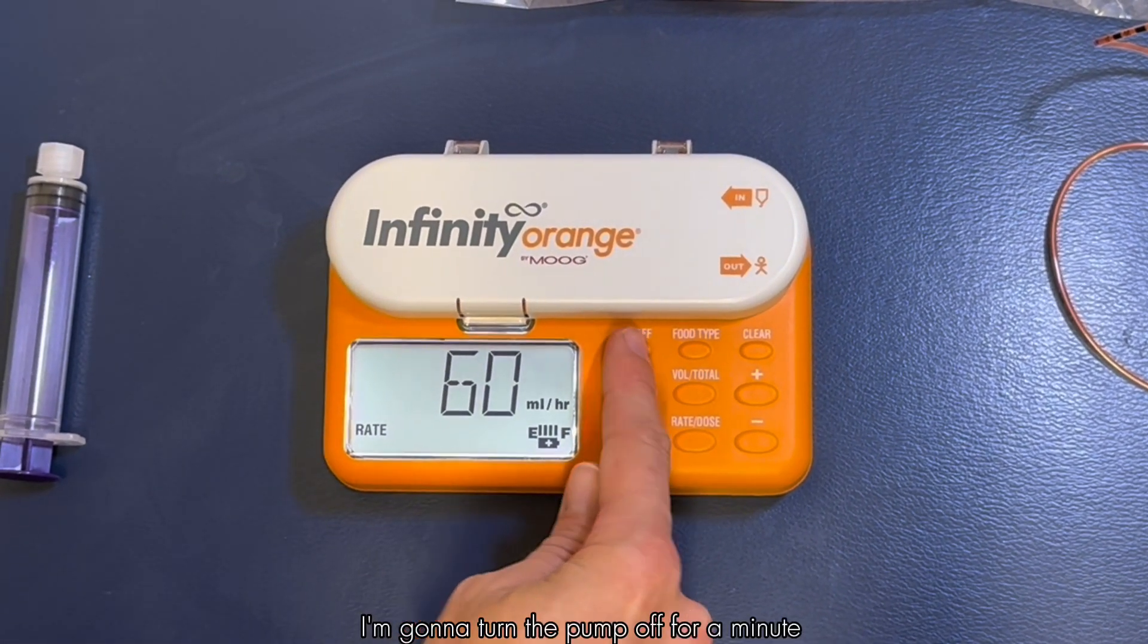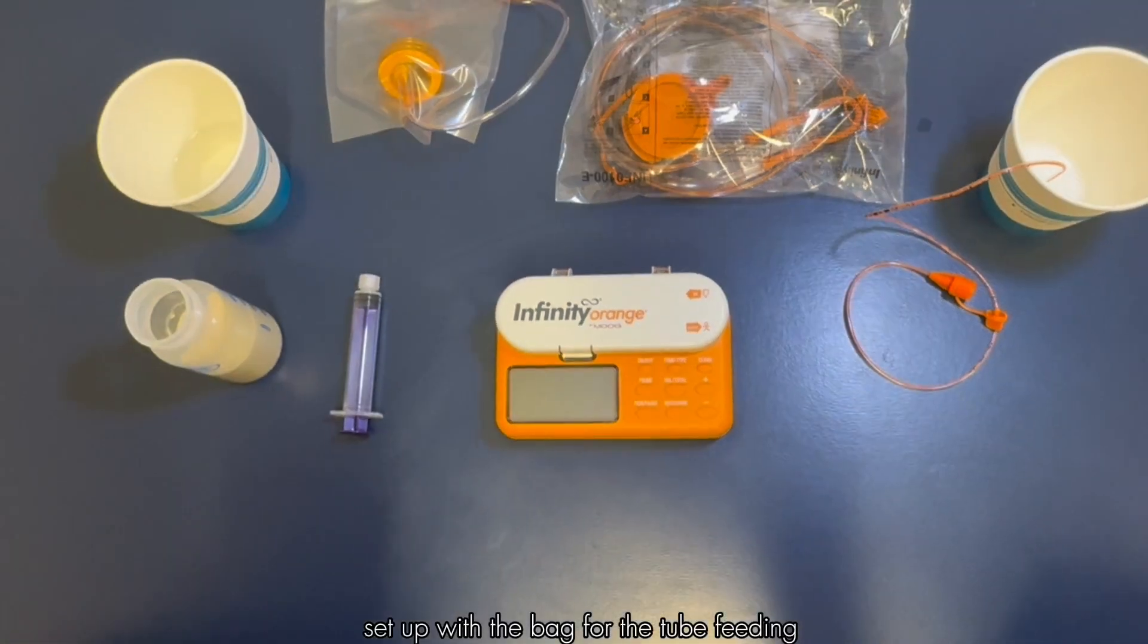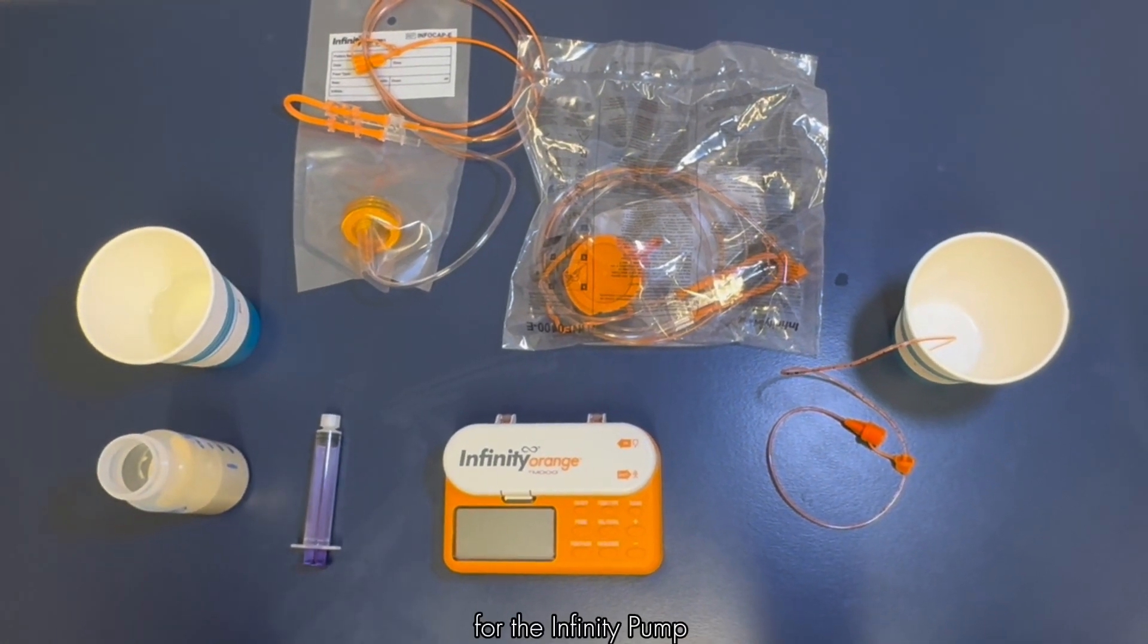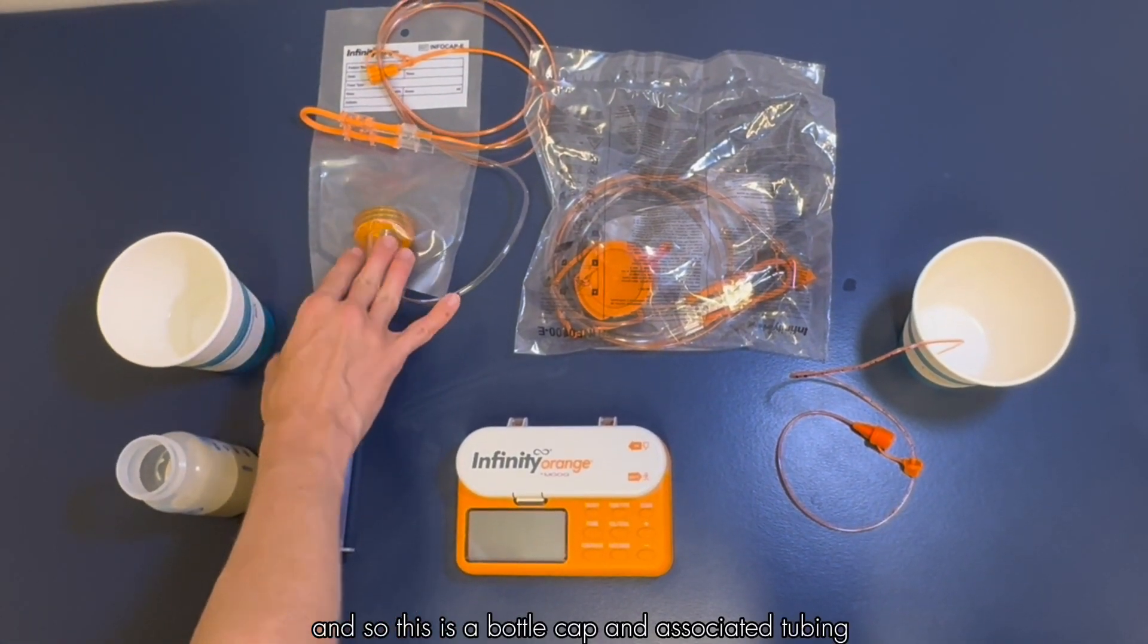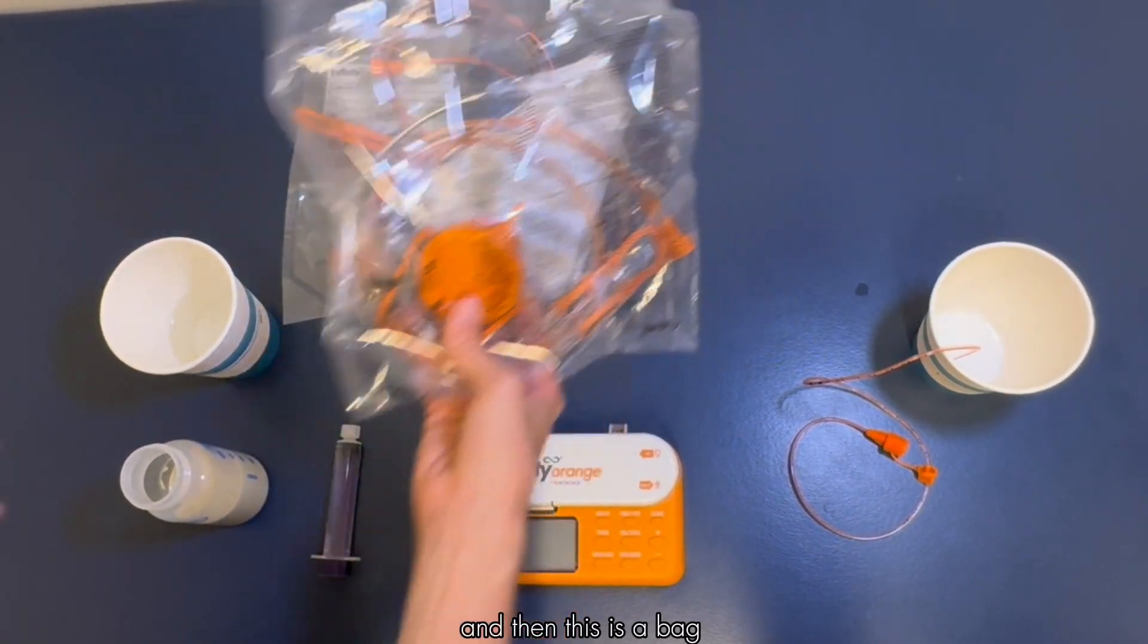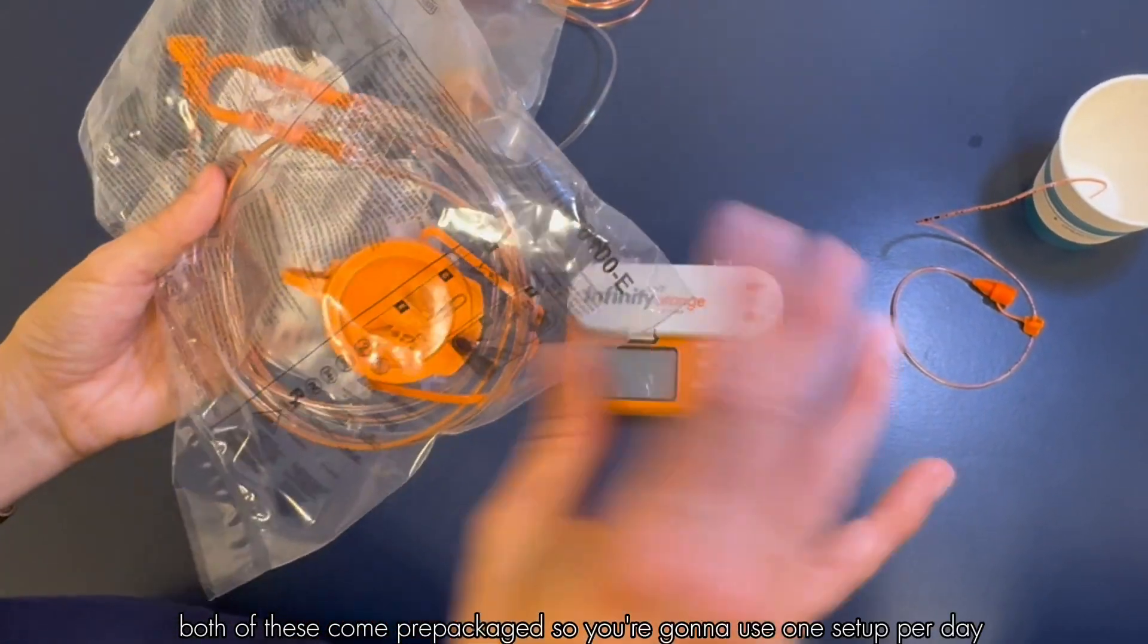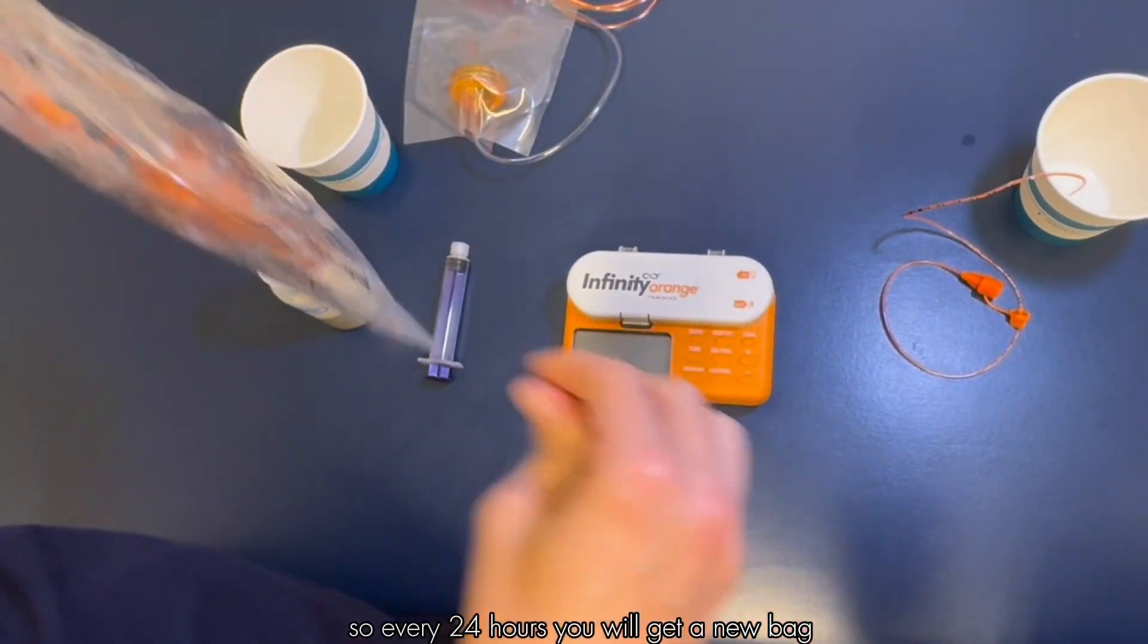I'm going to turn the pump off for a minute and then we can work on getting everything set up with the bag for the tube feeding. There's a few different kinds of bags that you might use for the Infinity pump. This is a bottle cap and associated tubing, and then this is a bag. Both of these come pre-packaged so you're going to use one set up per day, so every 24 hours you would get a new bag.